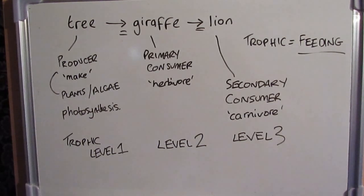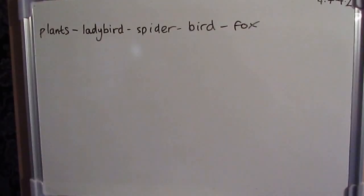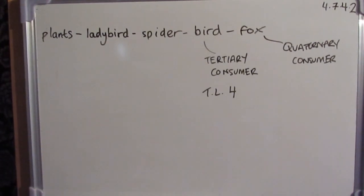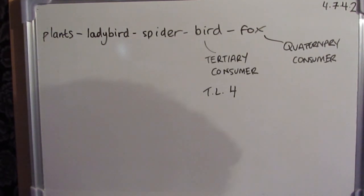Here's another example: plants are the producer, ladybirds get eaten by a spider, the spider gets eaten by birds, and birds get eaten by a fox. The plants are the producer, the ladybird is the primary consumer, the spider is the secondary consumer because it eats the primary consumer. The birds would be the tertiary consumer, which eats the secondary consumer.